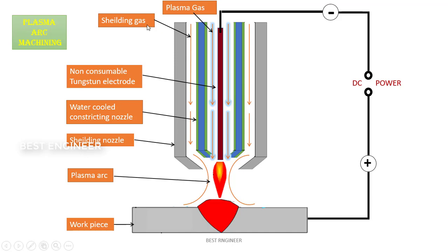Here the power supply is given to the electrode and workpiece, and this plasma gas is ionized and made electrically conductive. In plasma arc machining, the arc is generated through a constricting nozzle.